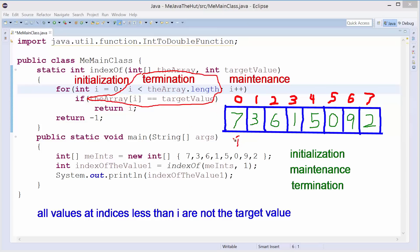As we initialize this, well, yes, it's true. All values at indices less than I, well, I is 0, so less than I would be negative, which we're not going to consider in this case, are not the target value. Yeah, we talked about that in the previous video. Okay, maintenance.